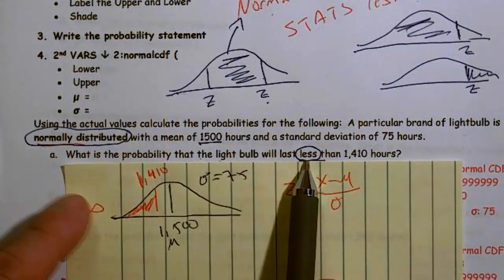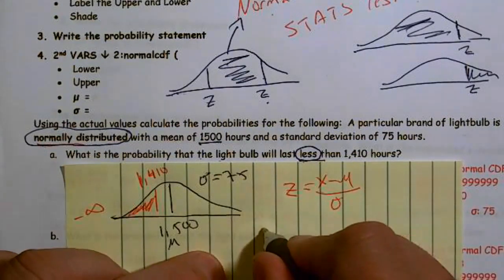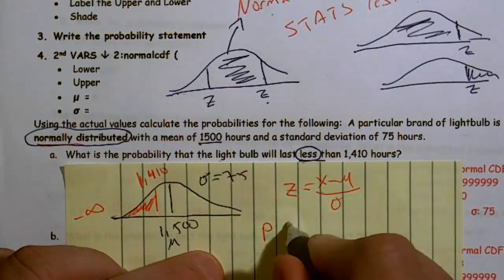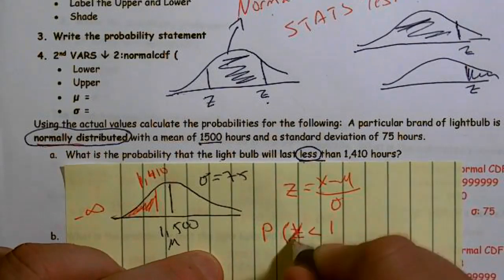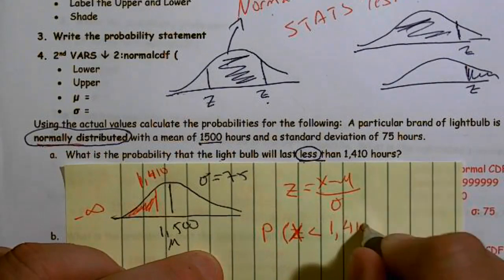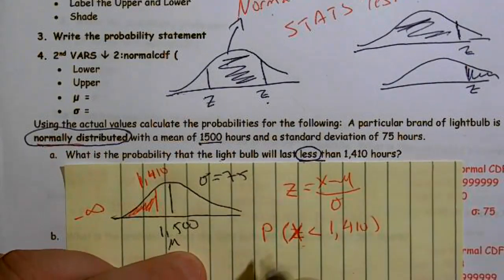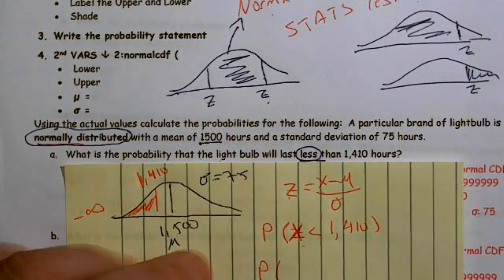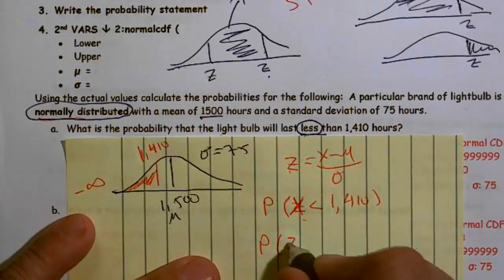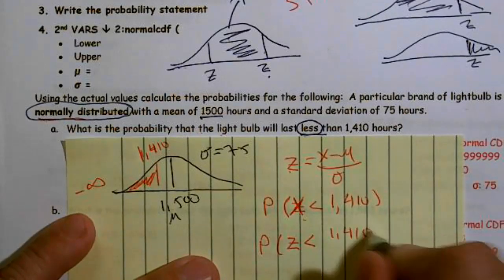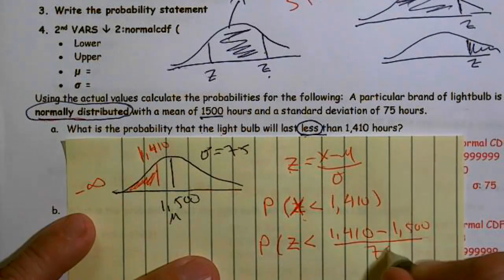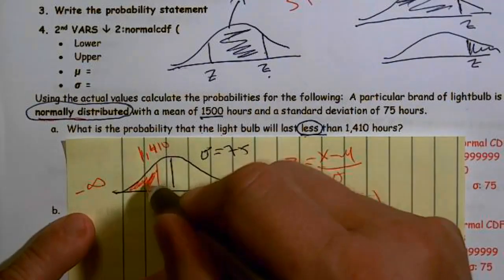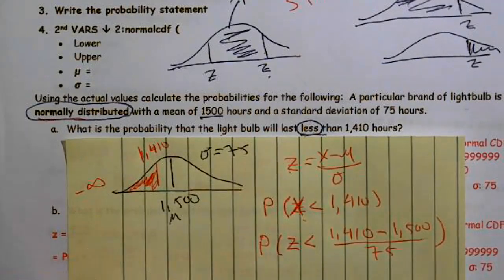The question asks for the probability that X is less than 1410. So my probability statement is: the probability that Z is less than 1410 minus 1500, over 75 — our mean is 1500 and standard deviation is 75. Since we're only shading one way, we're going to use the stats test Z-test.